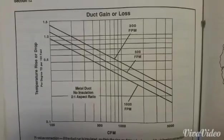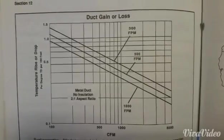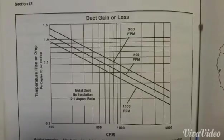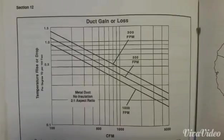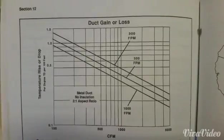If we look to the bottom of the chart, you see 1,000 CFM. We follow that line up to where we see the 500 feet per minute line on the graph. That's pretty close to where we would be at between 500 and 700 feet per minute. And that is 0.4.